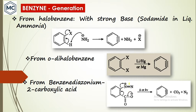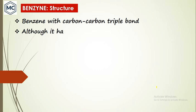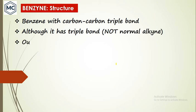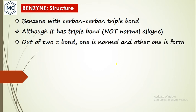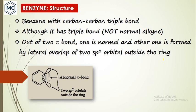A third method of generating benzyne is from benzenediazonium carboxylate — decarboxylation and removal of nitrogen gives benzyne. Regarding structure: benzyne has a carbon–carbon triple bond, although it is not considered a normal alkyne. In this triple bond, one pi bond is normal; the other is formed by lateral overlap of two sp2 orbitals outside the ring.